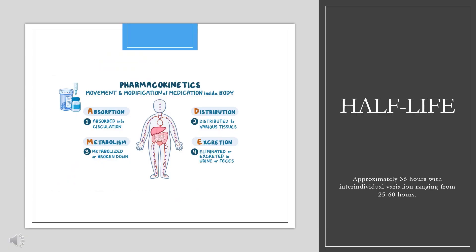Mechanism of Action. Sulfonylureas such as chlorpropamide bind to ADP-sensitive potassium channels on the pancreatic cell surface, reducing potassium conductance and causing depolarization of the membrane. Depolarization stimulates calcium ion influx through voltage-sensitive calcium channels, raising intracellular concentrations of calcium ions, which induces the secretion, or exocytosis, of insulin.